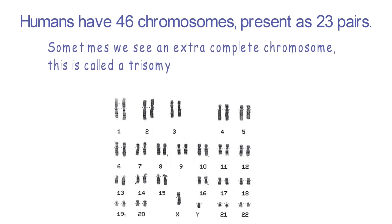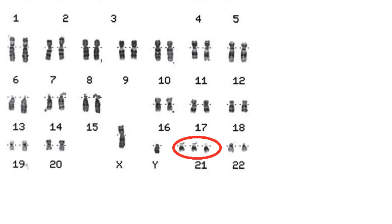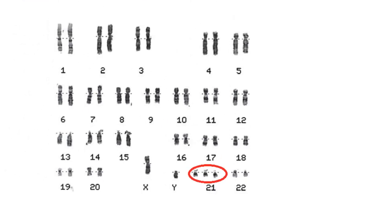Sometimes we see an extra copy of a complete chromosome. This is called a trisomy. In this case, there are three copies of chromosome 21, resulting in Down syndrome.